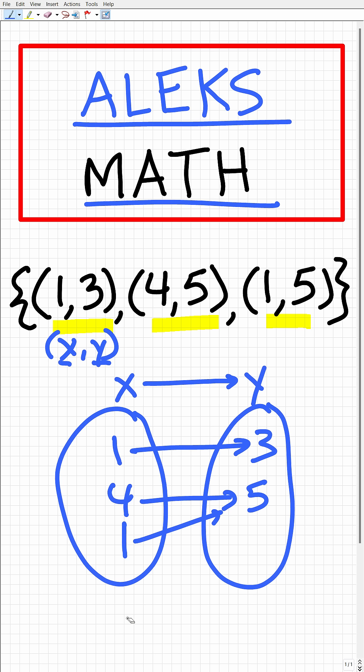So one great way to look at potential functions or relations in mathematics and to see if these relations are in fact functions is the following. When we're looking at a mapping diagram, what we want to look to see is if each X maps to one and only one Y. So one maps to only three, four maps to only five, but one is also mapping to five.